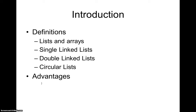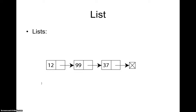We'll look at the difference between lists and arrays, singly linked lists, doubly linked lists, circular lists, and the advantages of lists. A list is nothing but a collection of nodes — it can be any number of nodes. A node has two parts: a data part, and a pointer which points to either null or the next available node in the list, establishing the connection between nodes.